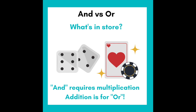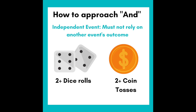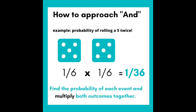And requires multiplication; addition is for or. With and, the events must be independent — they must not rely on one another. Figure out the probability of each event, then multiply both outcomes together.